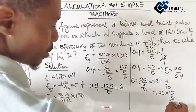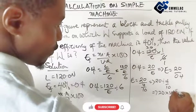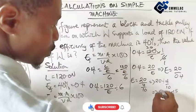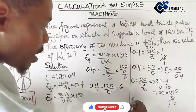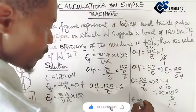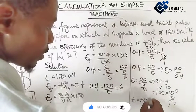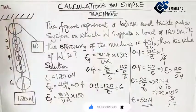This will give us 20 times 10 over 4. The effort here equals 10 times 5, which will give us 50 Newton final answer.